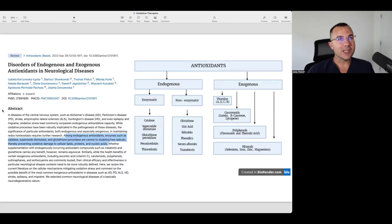Let's first start with looking at antioxidants from a very high level. I took this from this paper published in September 2023, titled disorders of endogenous and exogenous antioxidants in neurological diseases. I particularly want to look at how these antioxidant systems are effectively broken down. We have exogenous antioxidants or things that we take in from the environment, things like vitamins, polyphenols and minerals.